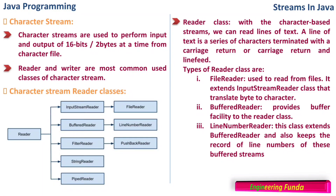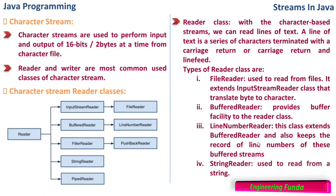LineNumberReader extends BufferedReader and also keeps a record of the line numbers of the buffered stream — helping in remembering how many lines are read and how many are remaining, which is useful for managing the buffer size. Then we have StringReader, which is used to read from a string — if there is a sequence of characters coming in, we can read it using the StringReader.